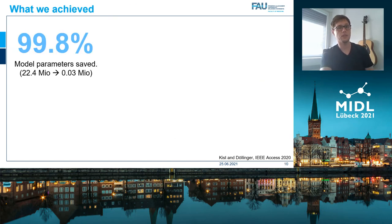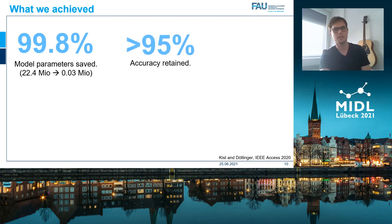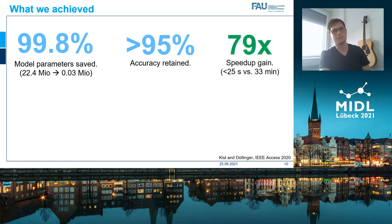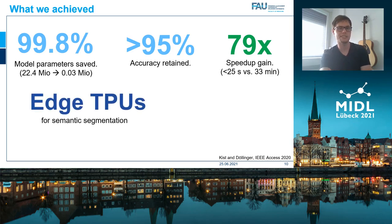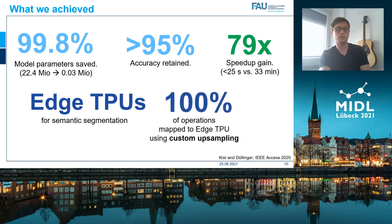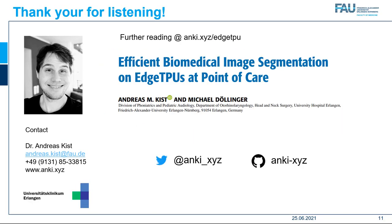Taken together, we are able to save 99.8% of the parameter space while retaining over 95% of the baseline accuracy. By combining all improvements, we gain a total speedup of 79 times, and we show for the very first time that we can utilize TPUs for semantic segmentation, and that we are able to map 100% of all operations to the TPU using our custom upsampling routine. Thank you for listening — more information can be found at the link provided.